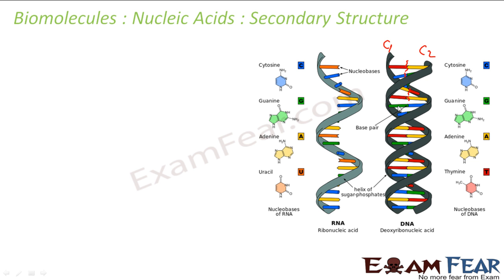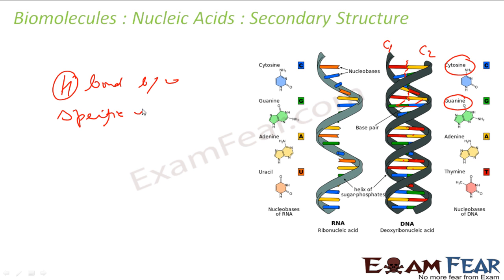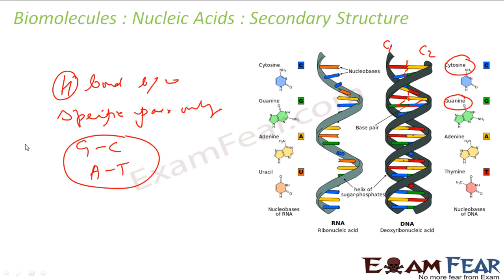Only certain base pairs are complementary to each other. Guanine forms a bond with cytosine — shown as green and blue — and adenine forms a bond with thymine — shown as yellow and red. These two strands are complementary because hydrogen bonds form only between these specific pairs: G pairs with C, and A pairs with T.